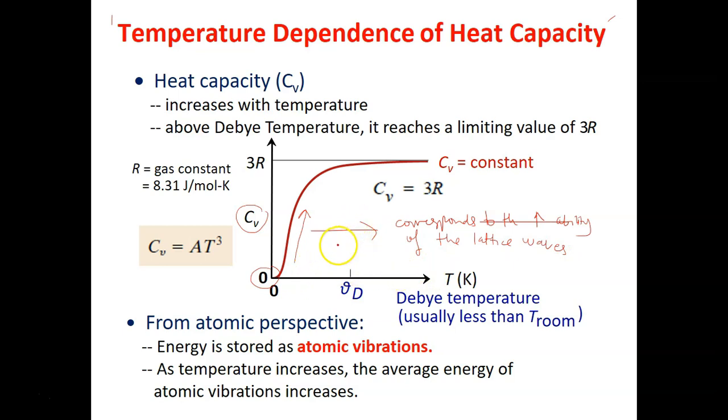And at low temperature, so we consider this as low temperature. At low temperature, the relationship between Cv and T is given as this. This is the relationship at this rapid increase or lower temperature. Where A here, what is A? A is temperature independent constant. So this is a constant. Alright.